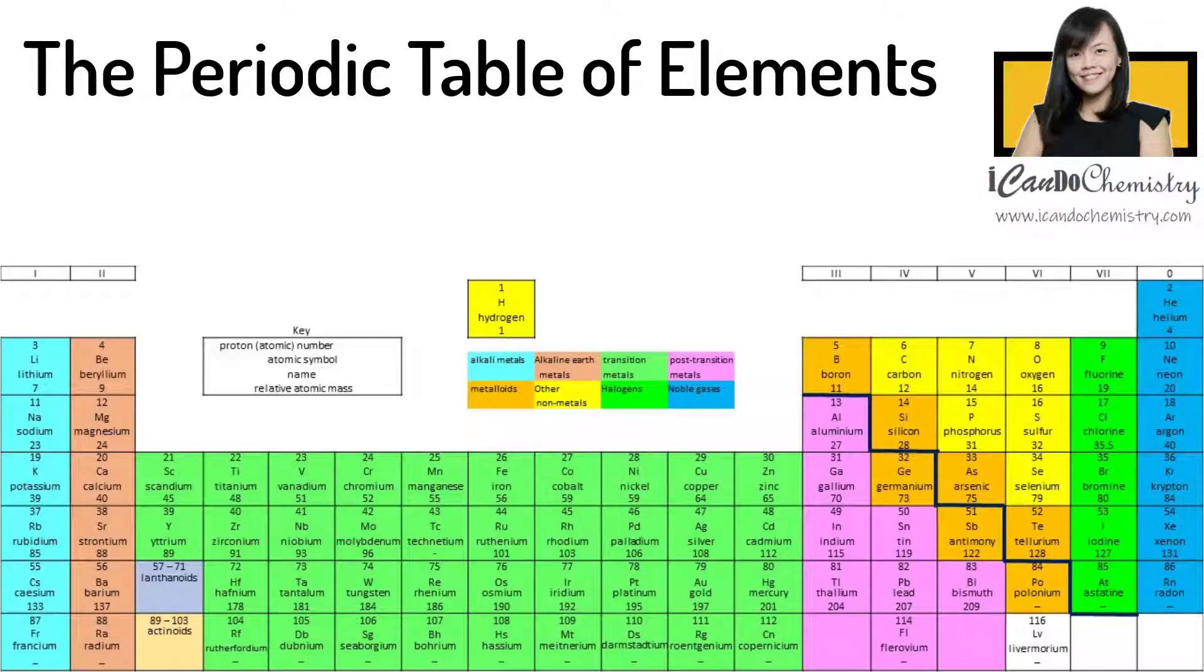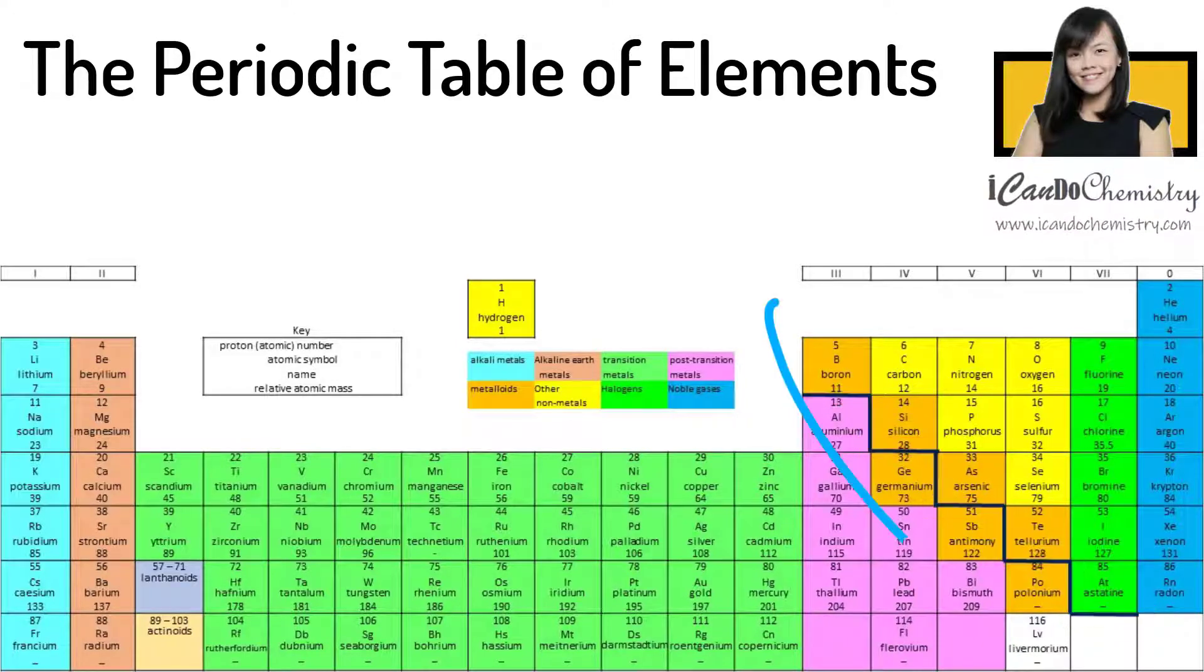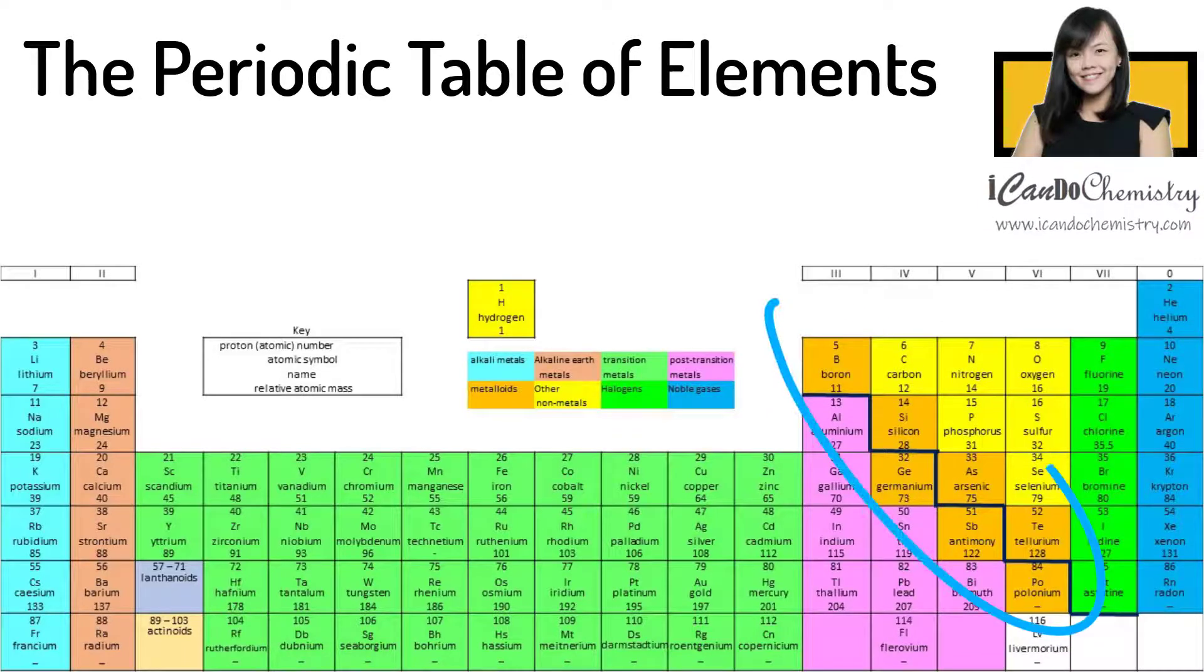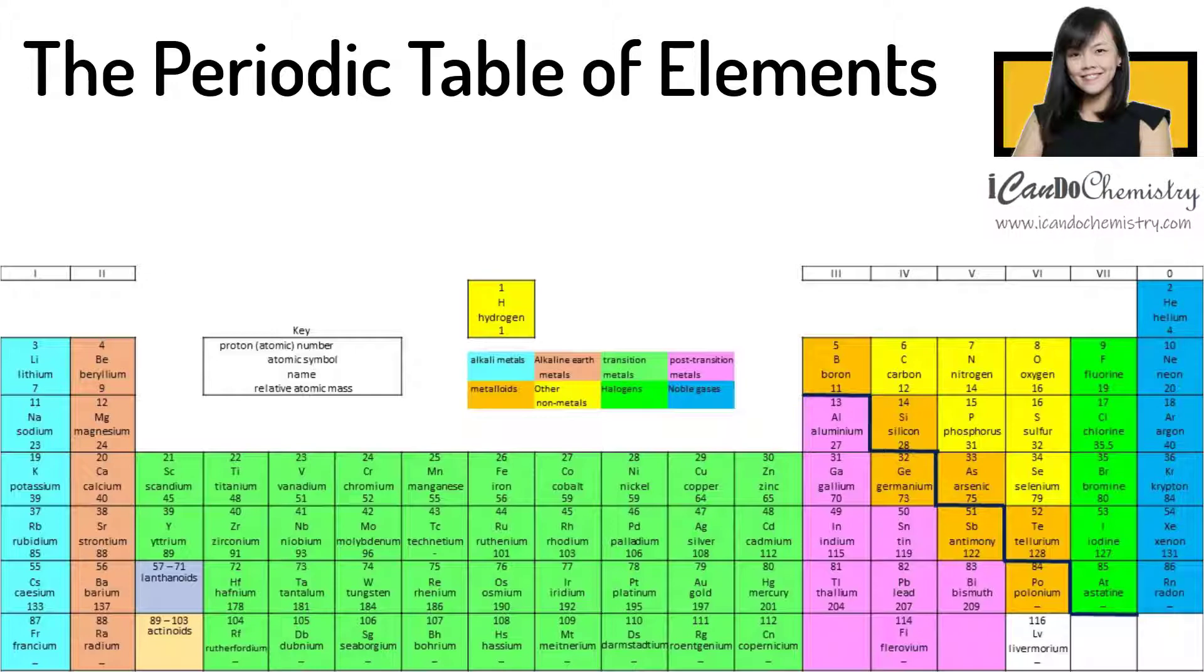The elements in the periodic table can be classified based on their metallic and non-metallic properties. Now you can draw a diagonal line in the periodic table which divides the metals from non-metals. Elements that are near this line, we can call them the metalloids. Now in this periodic table, the metalloids are colored orange. Metalloids are very special because they have the properties of both metals and non-metals. One very popular example is silicon.